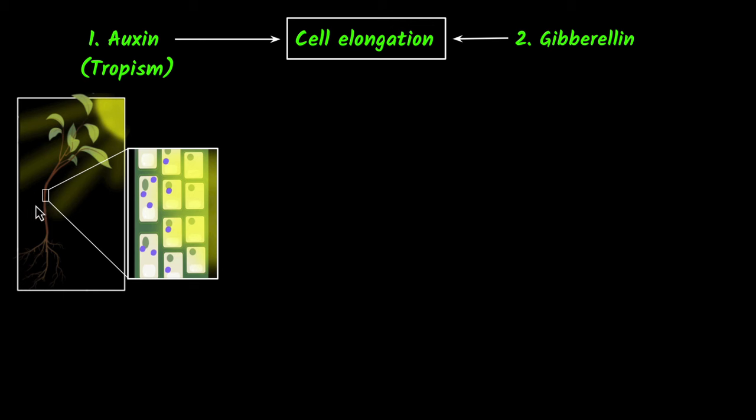the whole plant ends up turning towards the light. Gibberellin, on the other hand, is mostly useful in the growth of the stem itself. So these two help in cell elongation, but elongating cells itself is not enough.